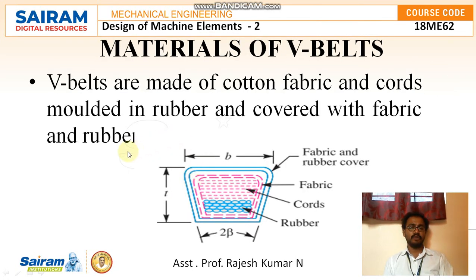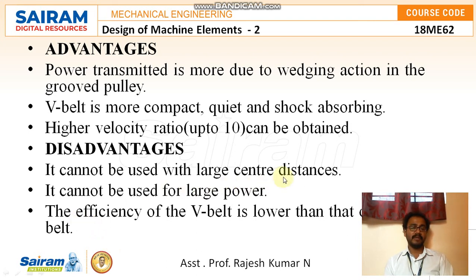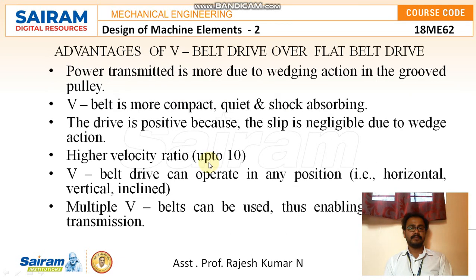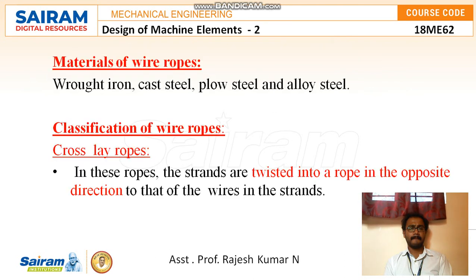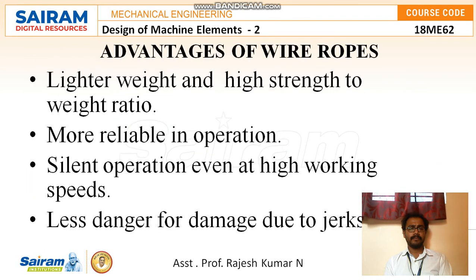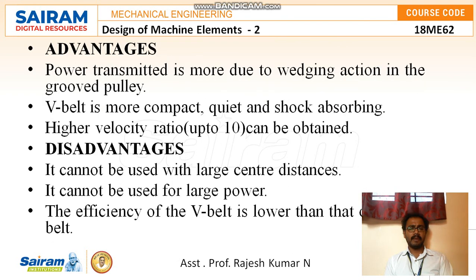V-belts are usually made of cotton fabric and cords molded in rubber and covered with fabric and rubber. Advantages of V-belts include greater power transmission due to wedging action in the groove pulley, compact and quiet operation, shock absorption, and higher velocity ratios up to 10. Drawbacks are that they cannot be used with large center distances or for larger power requirements, and the efficiency of V-belts is lower than that of flat belts. We will continue the remaining topics in the next video.